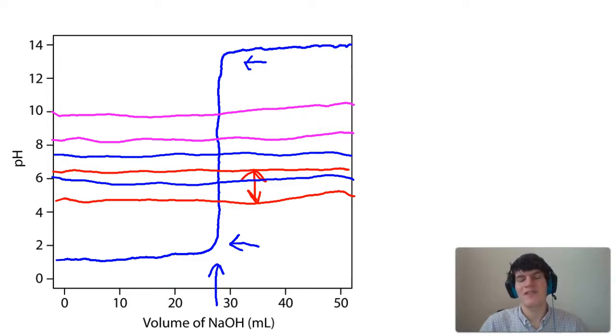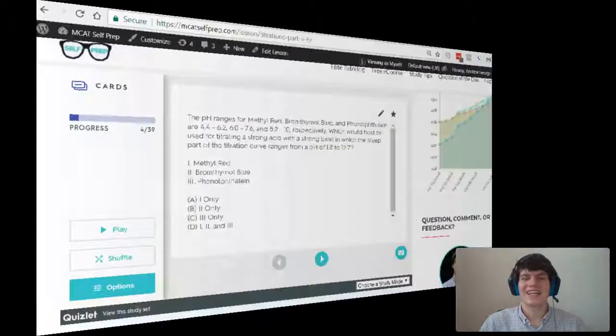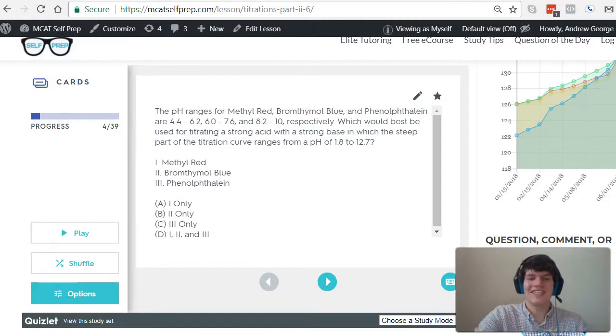Therefore, any one of these three indicators will be perfect for determining the equivalence point for this titration. If we take a second look at our answer choices, it looks like D. 1, 2, and 3 is the correct answer here.